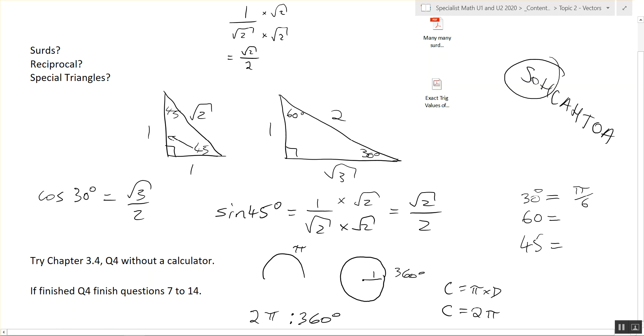Yep, so 180 divided by 6, or pi over 6. Does that make sense? So you can redraw the special triangles in terms of radians. Pi over 3. Pi over 6. And this one would be pi over 4.